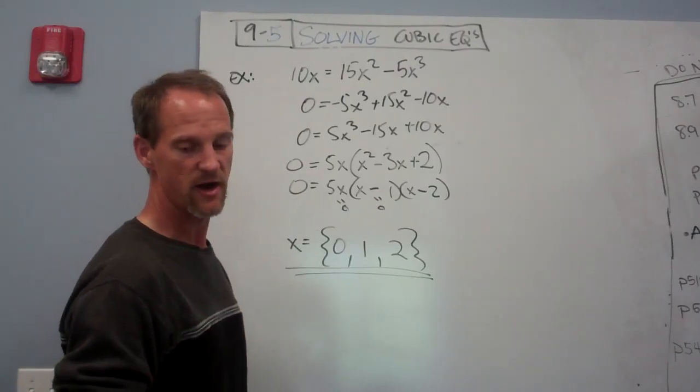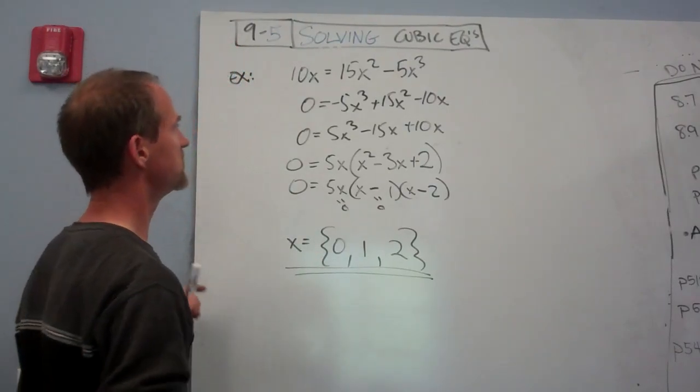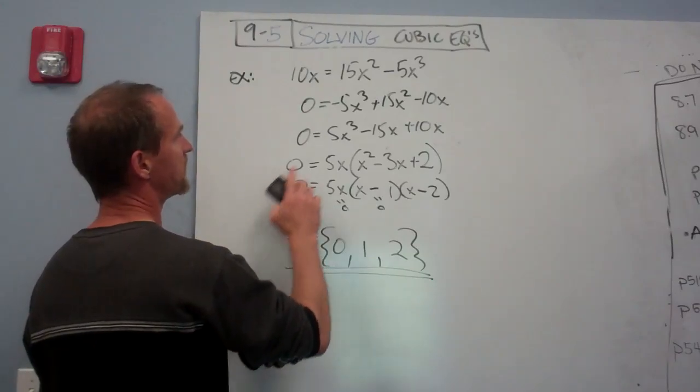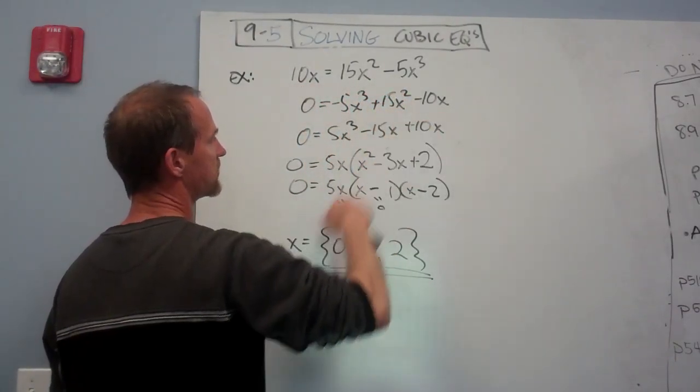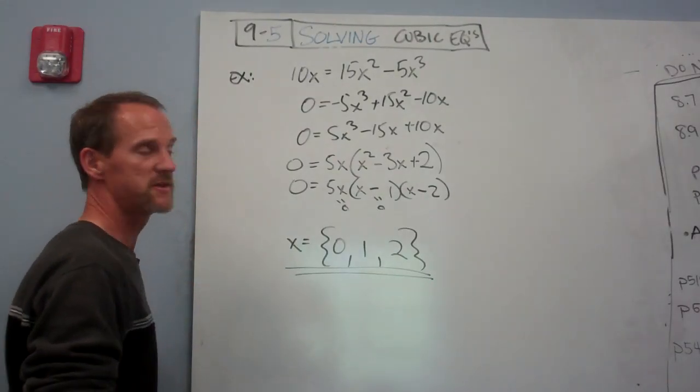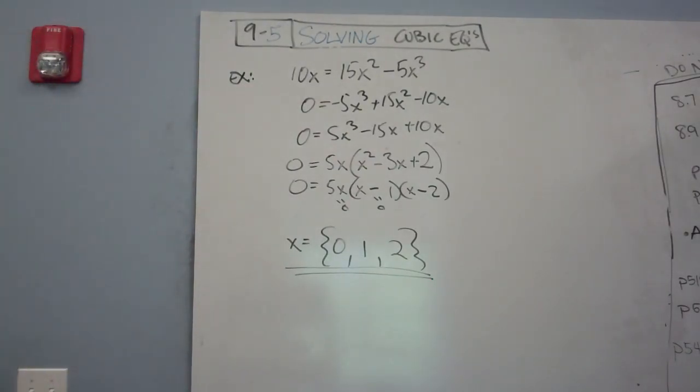That's basically what you're doing. There are different things you need to look out for. You need to look out for taking out a common number, and then just that quadratic that you can factor. But that's essentially what you're doing, so it's pretty straightforward. Thank you.